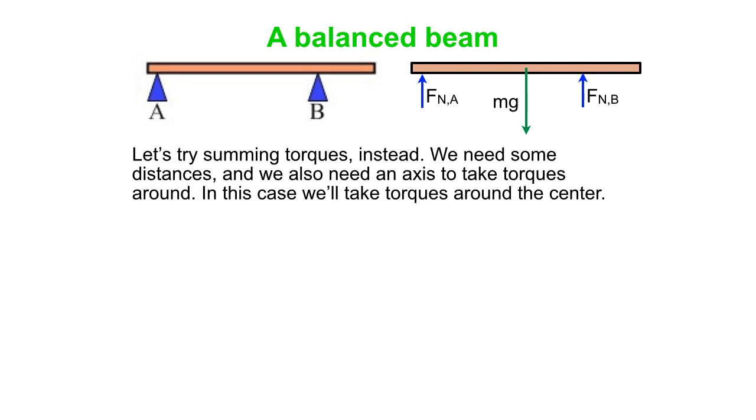So this is why we use torques. Torque to the rescue. So to actually calculate torque we need some distances, and we also need to choose an axis to take torques around. So in this case we'll take torques around the center of the beam. And we'll measure our distances from there. So we'll say scale B is D to the right of the center, and scale A is 2D to the left of the center. And there's our axis right through the middle.